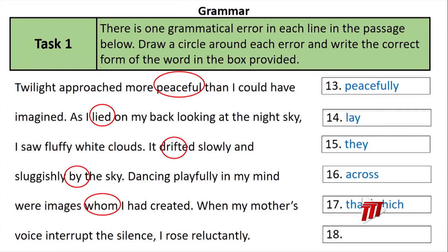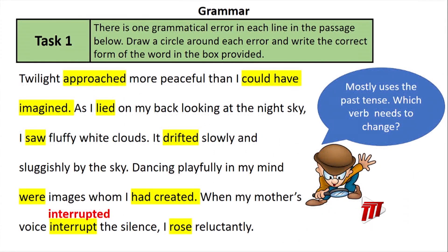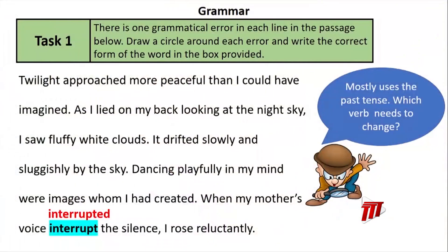Line 18 — the final line. Looking back at all the finite verbs in the passage, they are mostly in the past tense. The error in the final line is 'interrupt' — 'When my mother's voice interrupts the silence' should be 'interrupted,' because the entire passage is written in the past tense, so that verb must also be past tense.